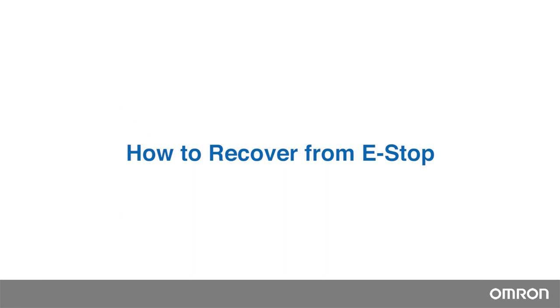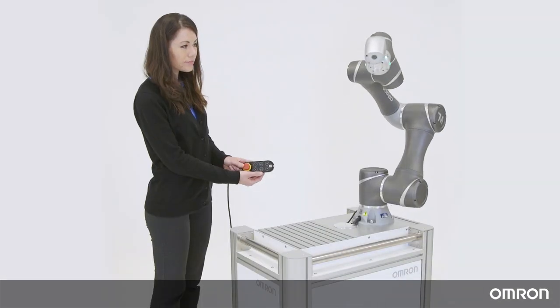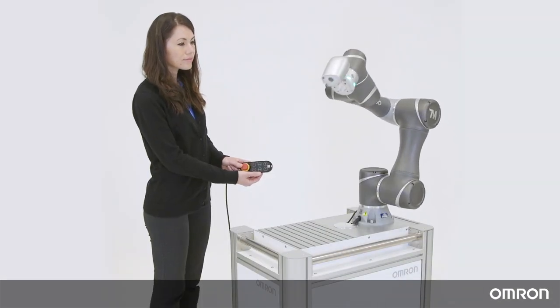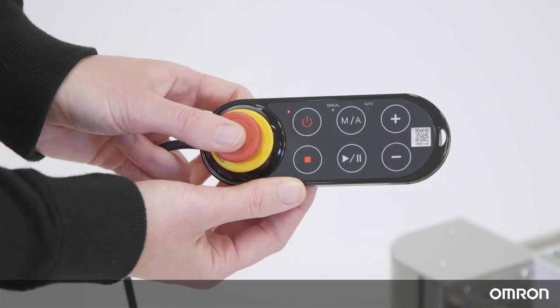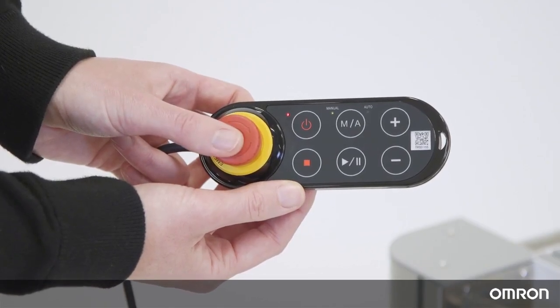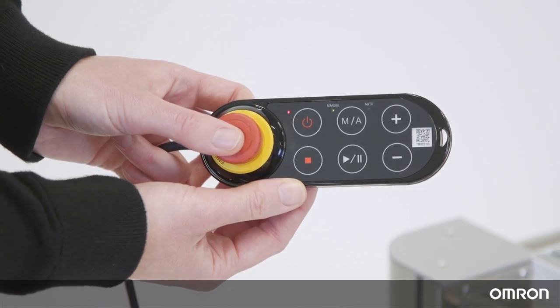How to recover from E stop. To stop the Cobot in an emergency situation, you will have to hit the E stop. By pressing the E stop, the power to the Cobot will be shut off after it comes to a complete stop.